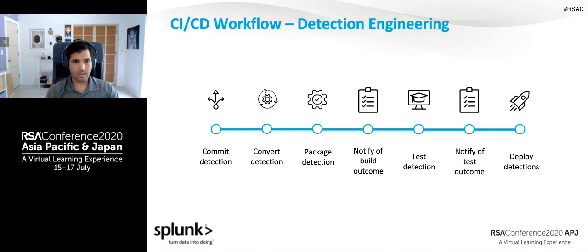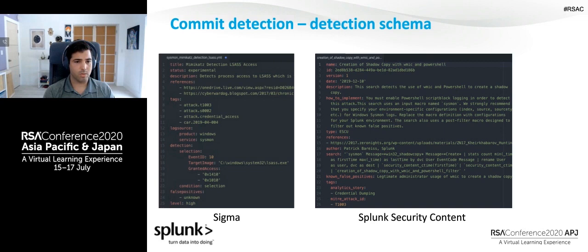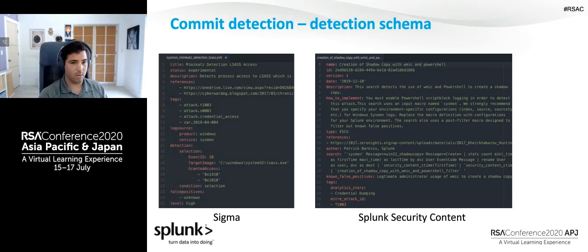Let's dig into what committing a detection looks like. I want to start with two examples from two different projects: one is called Sigma, the other is called Splunk Security Content, and both have slightly different ways of approaching writing detections. But a big commonality between both is they adhere to a schema. Sigma and Splunk Security Content both have over 200 detections for SIEMs that any individual consumer can leverage, and both are open source and free. What makes both of these projects successful is this detection schema.